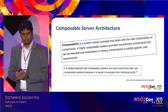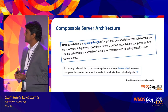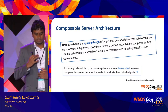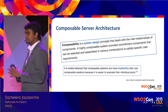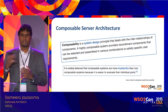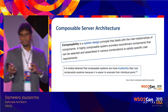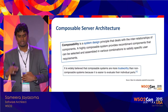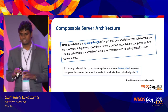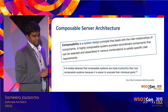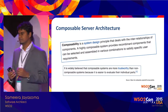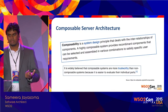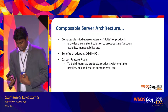Carbon kernel gives you a composable server architecture, which is what we need from OSGi. This means you can reuse a subset of components based on user requirements. For example, if you need data services functionality in ESB, you can go to our online repository and install it. We're going to continue supporting this feature — it's one of the features that differentiates us from other open source and proprietary vendors.